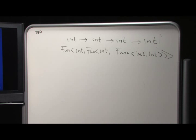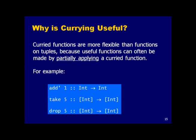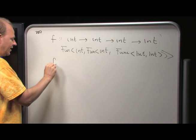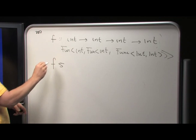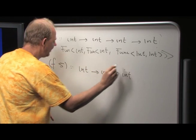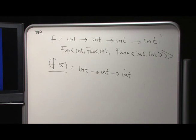Why do we use curried functions? Because you can partially apply them. If you have a function `f` of type `Int -> Int -> Int -> Int`, you can apply it to just one argument, say `f 5`, and get back a function of type `Int -> Int -> Int`. You've created a closure capturing that first argument. This is lightweight in Haskell and is commonly done — take a curried function, apply some arguments, and pass the resulting function around.